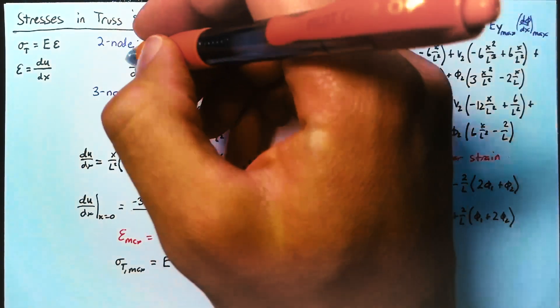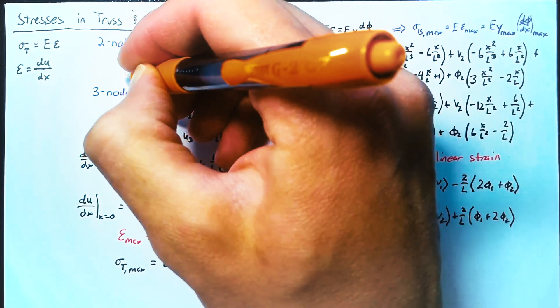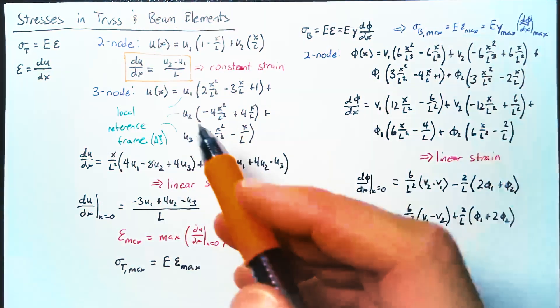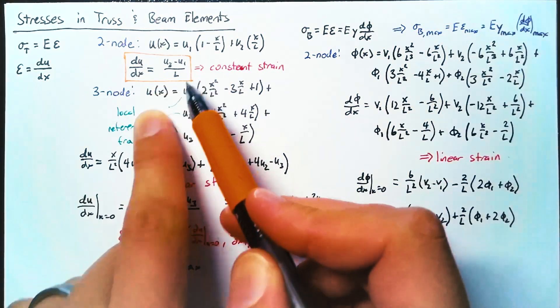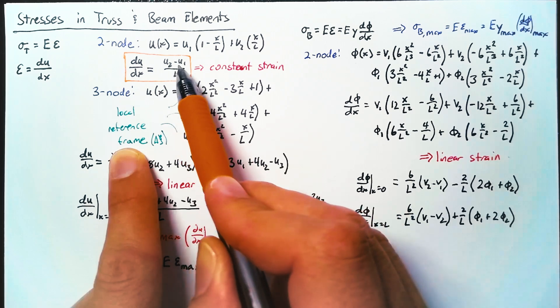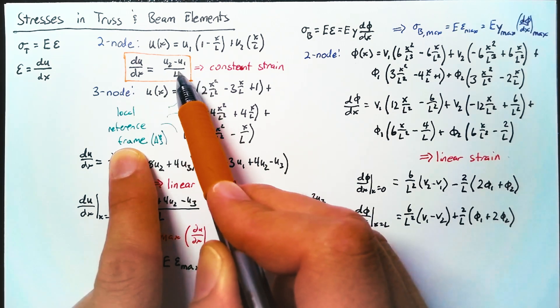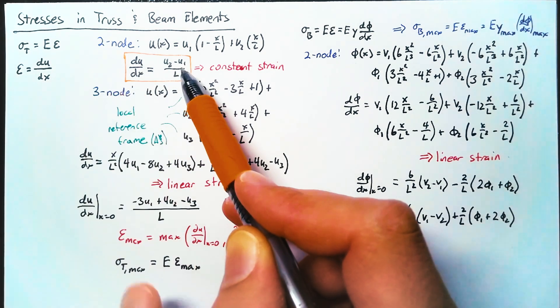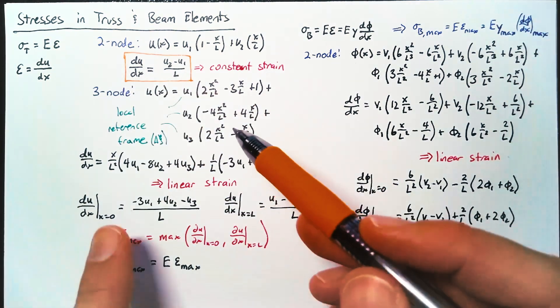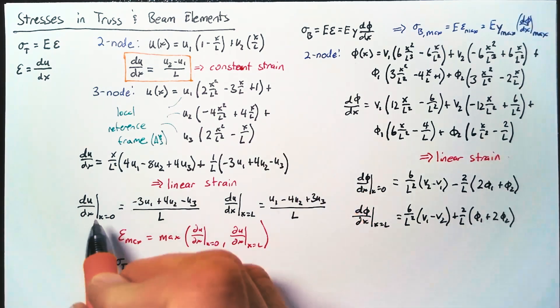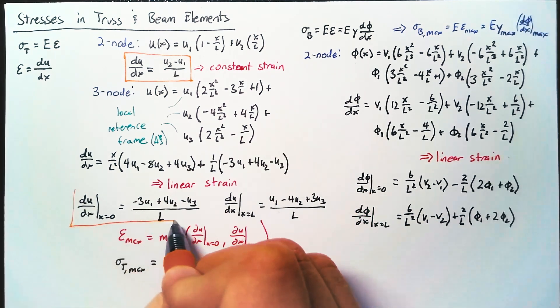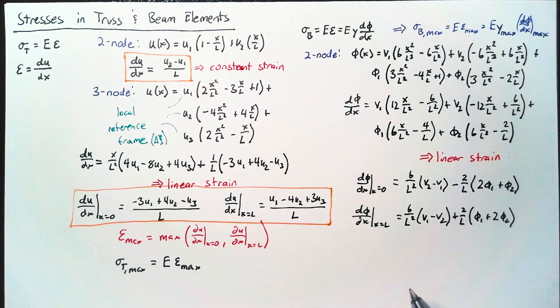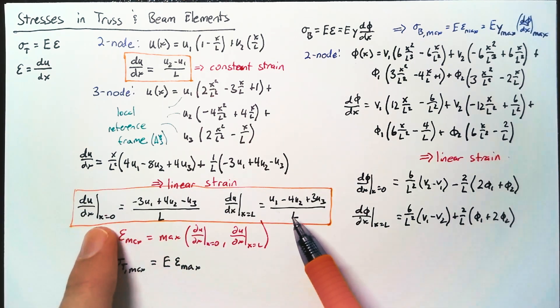Now, just to recap, for our two node bar element, we need to look at the local reference frame, but we can find the displacements in that local reference frame, and our strain is based purely on those. Very simple equation. For the three node case, we do need to go look at both locations, x equals zero and x equals L, and find out which of these is larger.